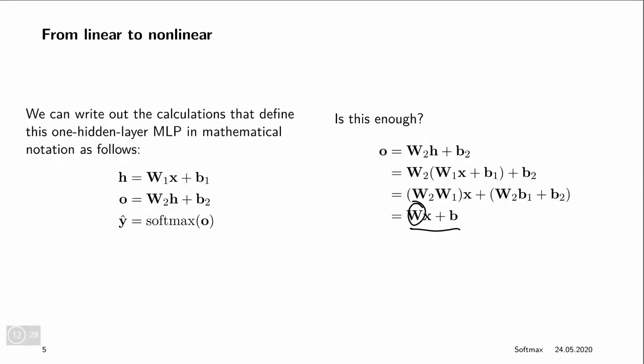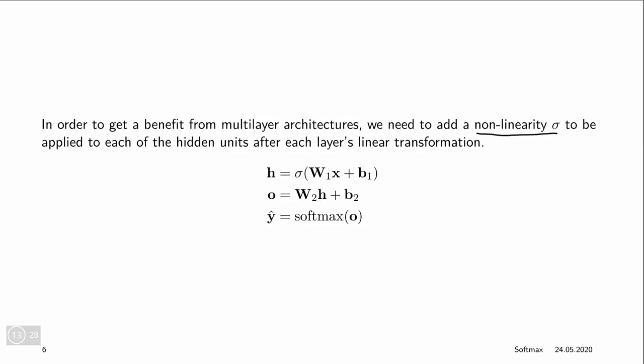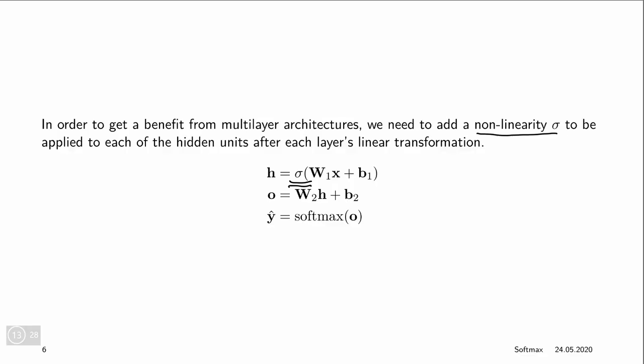So we're not yet done — we have not achieved non-linearity. We still have a linear neural network. What we need is to add non-linearity between these two linear functions, in the computation of h: adding a non-linear function that we call sigma. This just needs to be some form of non-linearity. As soon as we take this linear function of the inputs, plug it element-wise into some non-linearity, and then compute our linear function, we will not be able to reduce this to a linear neural network.